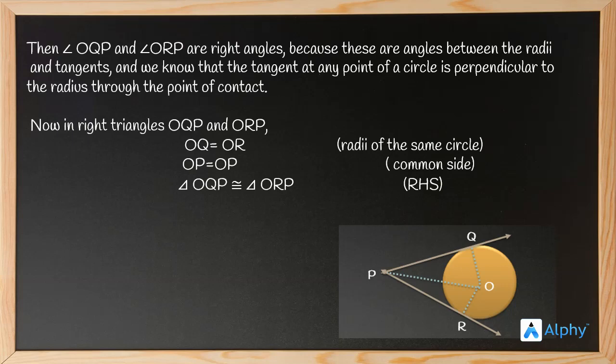Both triangles have a right angle. Therefore, PQ equals PR by the CPCT rule, which states that corresponding parts of congruent triangles are equal. Hence proved.